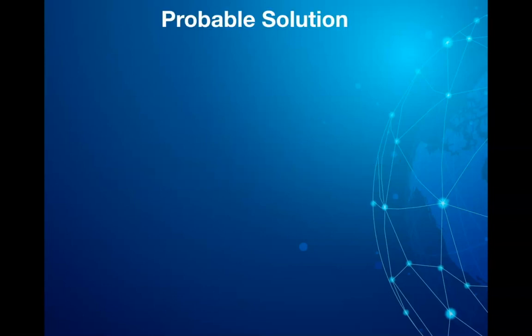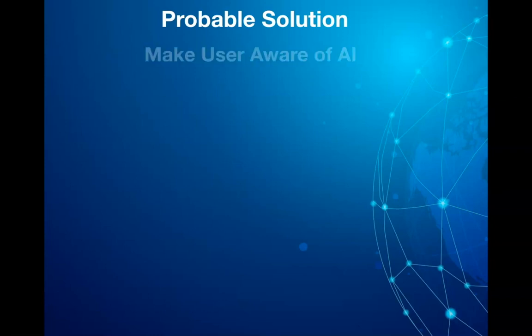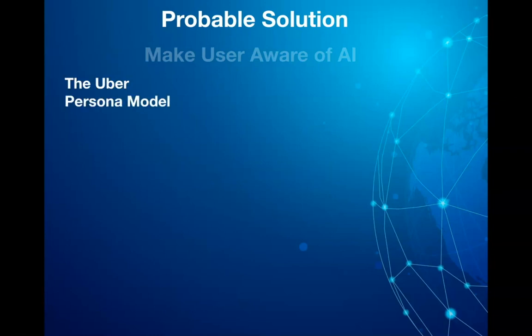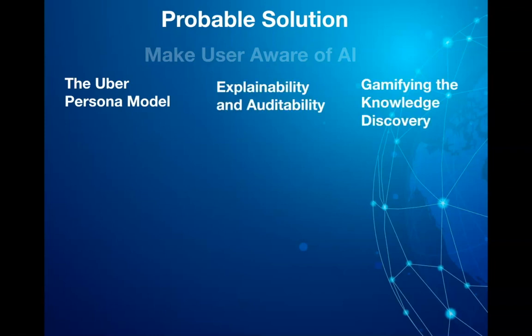I am suggesting a few approaches that can be used to deliver smart and transparent AI applications. The three approaches are: the Uber Persona Model, explainability and auditability, and gamifying the knowledge discovery. So let's understand what I mean by each of these concepts.